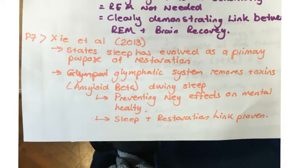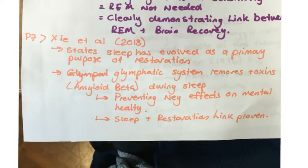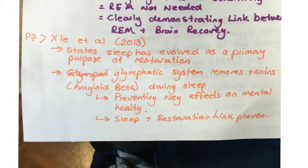In paragraph seven, we look at Xie et al. 2013 — an absolutely essential piece of evidence mentioned in the examiner's report, so it must be included in your essay. Xie et al. states that sleep has evolved as a primary purpose of restoration. An example of this is through the glymphatic system, which, when we sleep, removes toxins such as amyloid beta from our brain, therefore preventing negative side effects of these toxins on our mental health. This reconfirms that sleep and restoration are inextricably linked, and the main function of sleep is to restore our body.